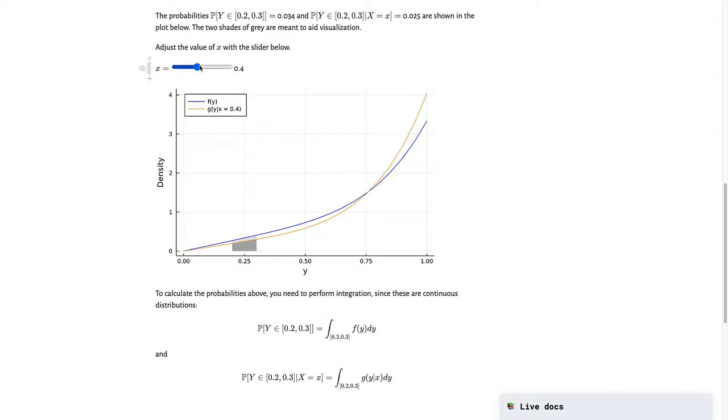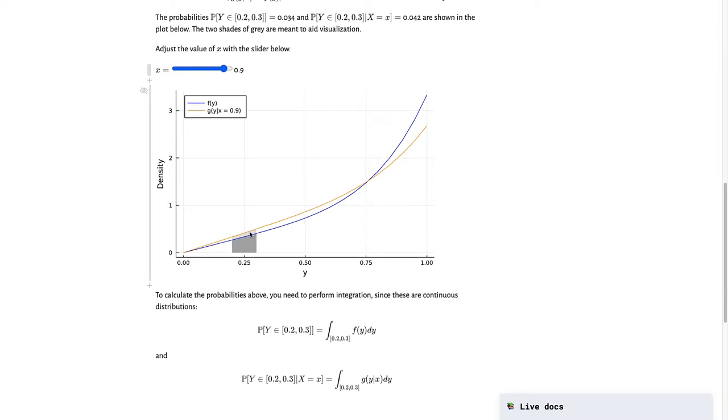Now depending on what value of x you pick, the shading will change. I basically try to put whatever density is below the other in a darker gray and the one above it in a lighter gray. But if you need to see a numerical representation of these values, here they are above. And those will update as well as you go through different values of x.